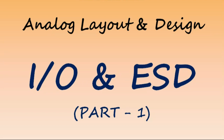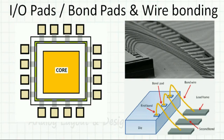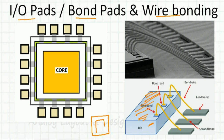Welcome to the Analog Layout and Design YouTube channel. Today we will speak about IO and ESD. This is a lengthy lecture split into many parts — this is part one. Let's try to understand what bond pads or IO pads are and what wire bonding is. This is an IC with all my circuitry, and it needs to connect to the external world. I have a chip — this is my die area, my circuit — and from here I need to connect to the external pins. I put a pad and from there connect a wire bond.